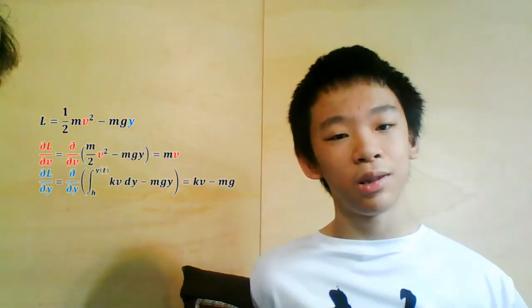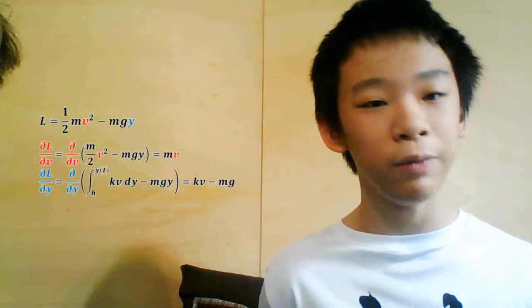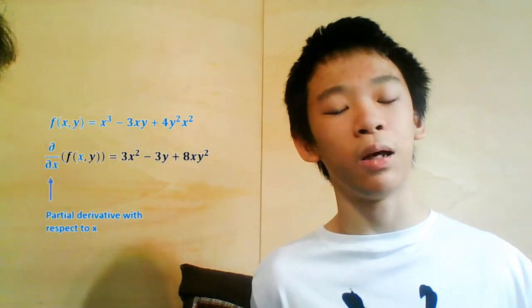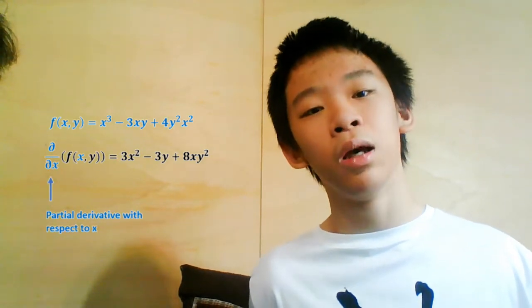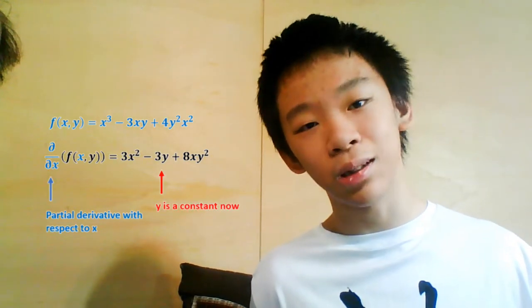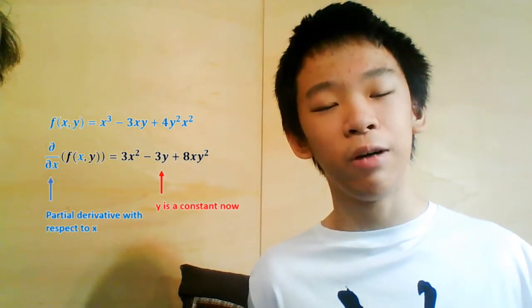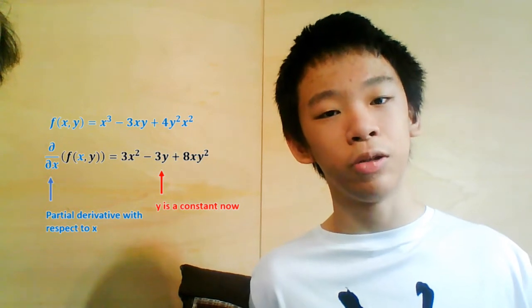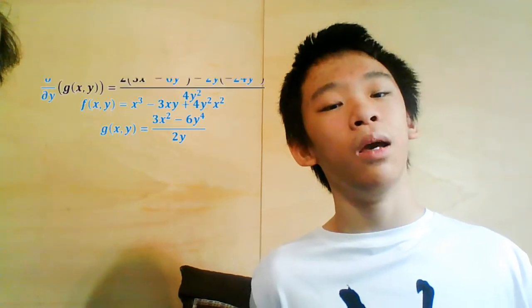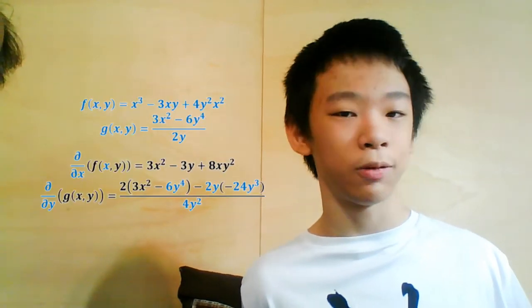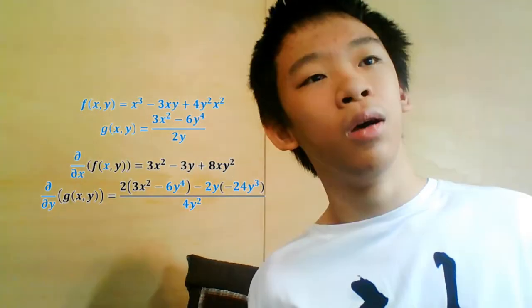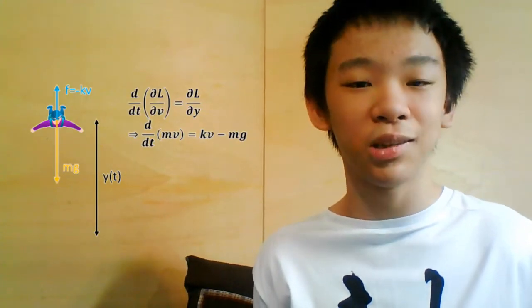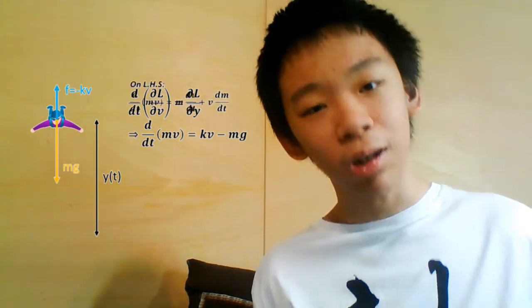Side note: to take the partial derivative of a multivariable function f(x, y), you treat the other variable as a constant and differentiate with respect to your chosen variable. Here are some examples. So the Euler-Lagrange equation becomes the time derivative of mass times velocity equals mg minus kV.